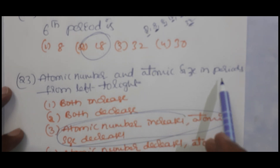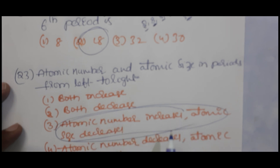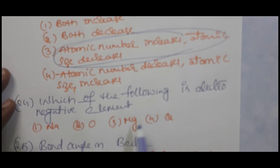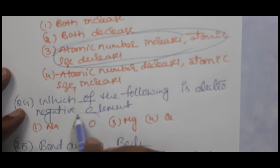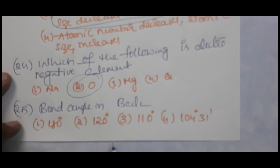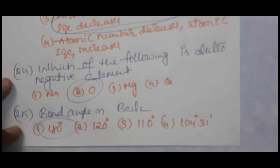In a period from left to right, atomic number increases and atomic size decreases. Which of the following is an electronegative element? Metals are electropositive; oxygen is the only non-metal listed and is electronegative. Bond angle in beryllium chloride (BeCl₂) is 180 degrees.